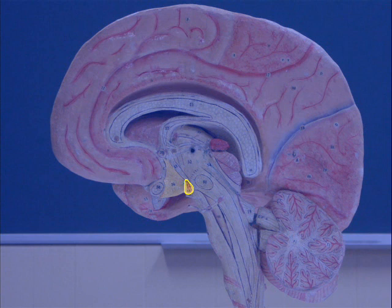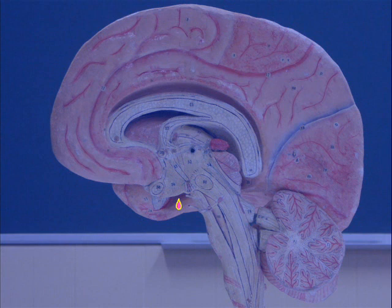Behind the hypothalamus, we find the mammillary bodies, which are particularly sensitive to chronic alcoholism and whose degeneration will promote memory deficits. Below the hypothalamus, we find the pituitary gland.